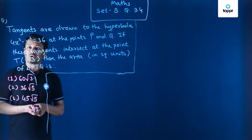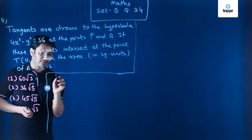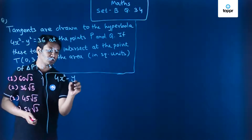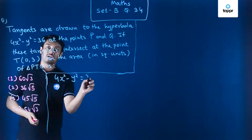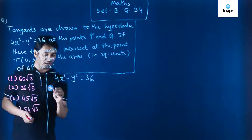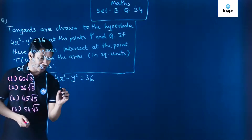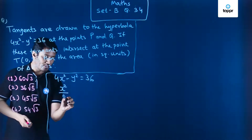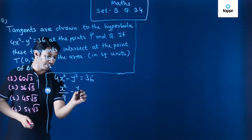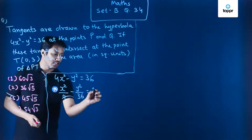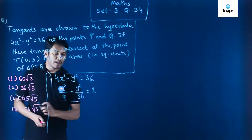The curve given to us is 4x² minus y² equal to 36, which is a hyperbola. We can rewrite this as x²/9 minus y²/36 equal to 1.